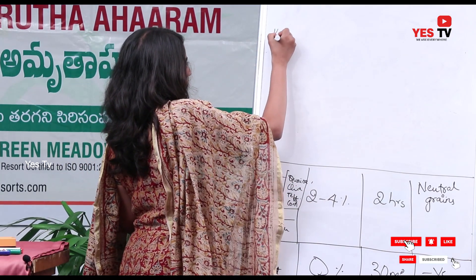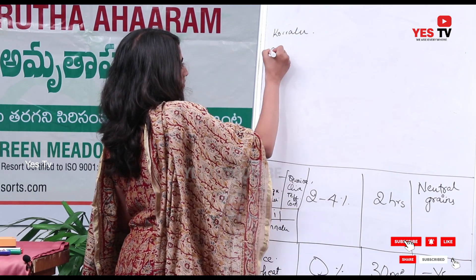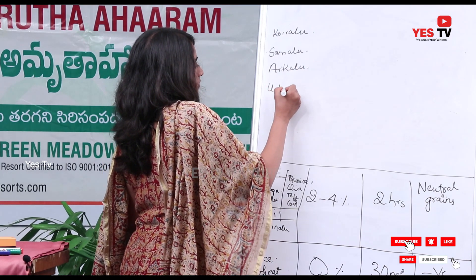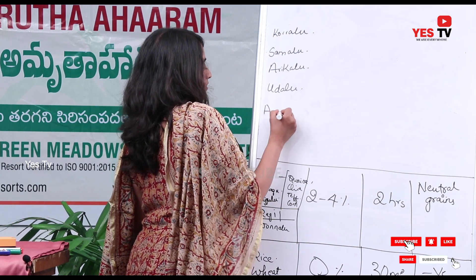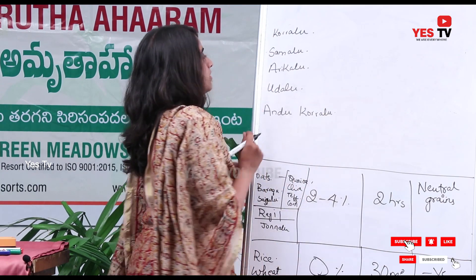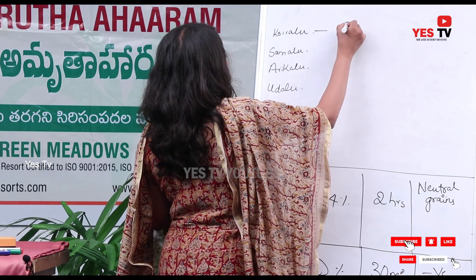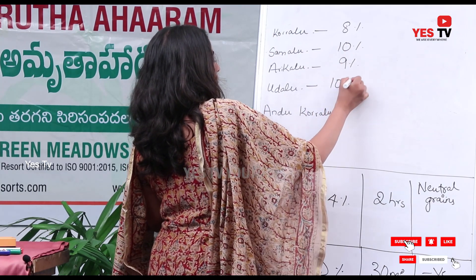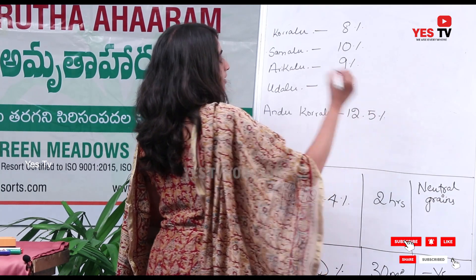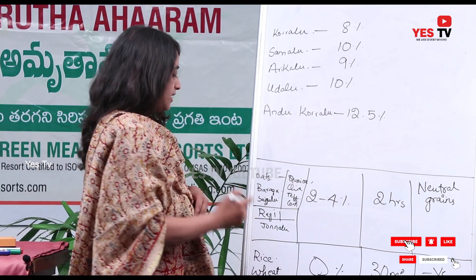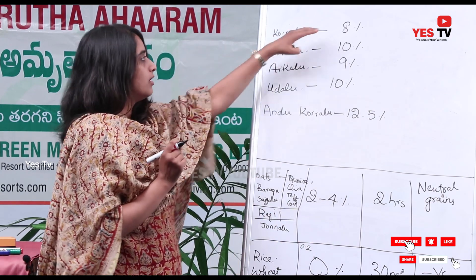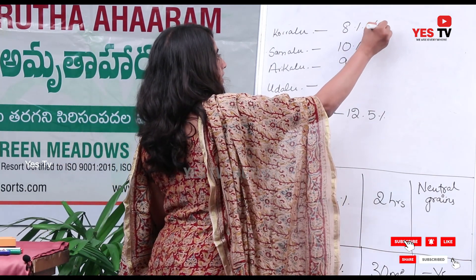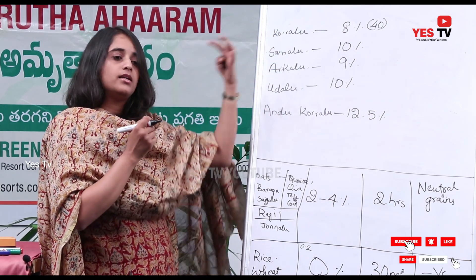Those grains are: korralu (8% fiber), saama (10%), arikalu (9%), uudalu (10%), and andu korralu — which has 12.5% fiber. So compare: if you take red rice, it has just 0.2% fiber. Even the lowest of these positive grains — korralu — has 8% fiber. That means korralu has 40 times more fiber than red rice, and others have even more.